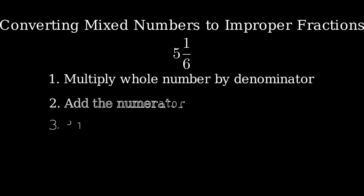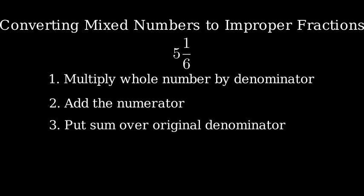Here are the steps we'll follow. First, multiply the whole number by the denominator. Then add the numerator. Finally, put this sum over the original denominator.